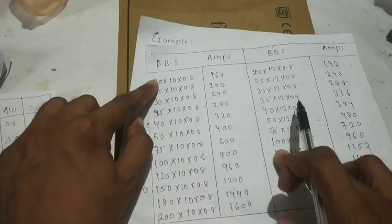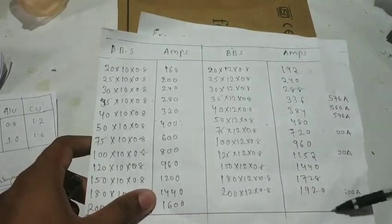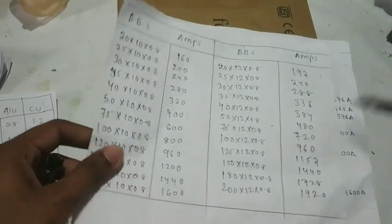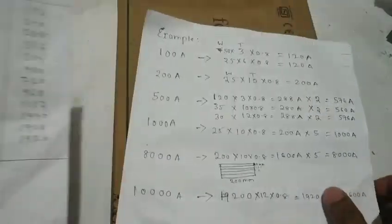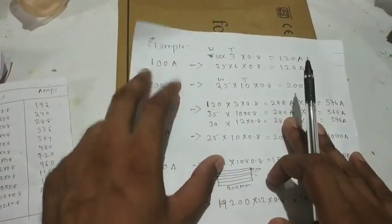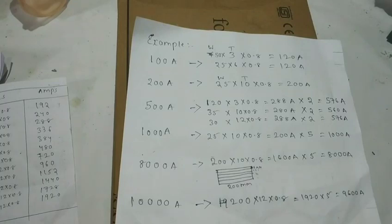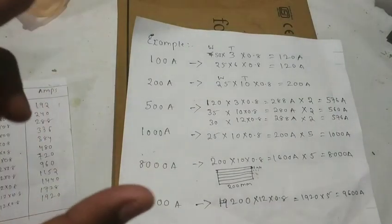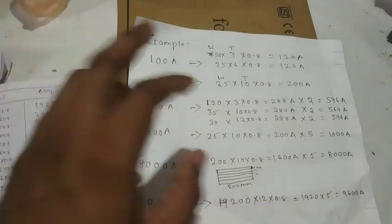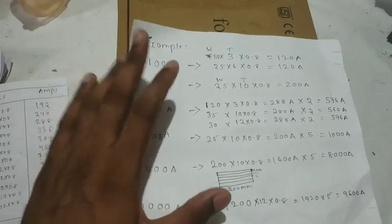I got a bus bar rated for 100 amps. The bus bar is designed as a bus bar using the same formula. For aluminium, normal factor is 0.8. Now I am going to design for 100 amps. How much width do we need? You just need 100 amps. We have to choose the right bus bar combination to meet 100 amps.